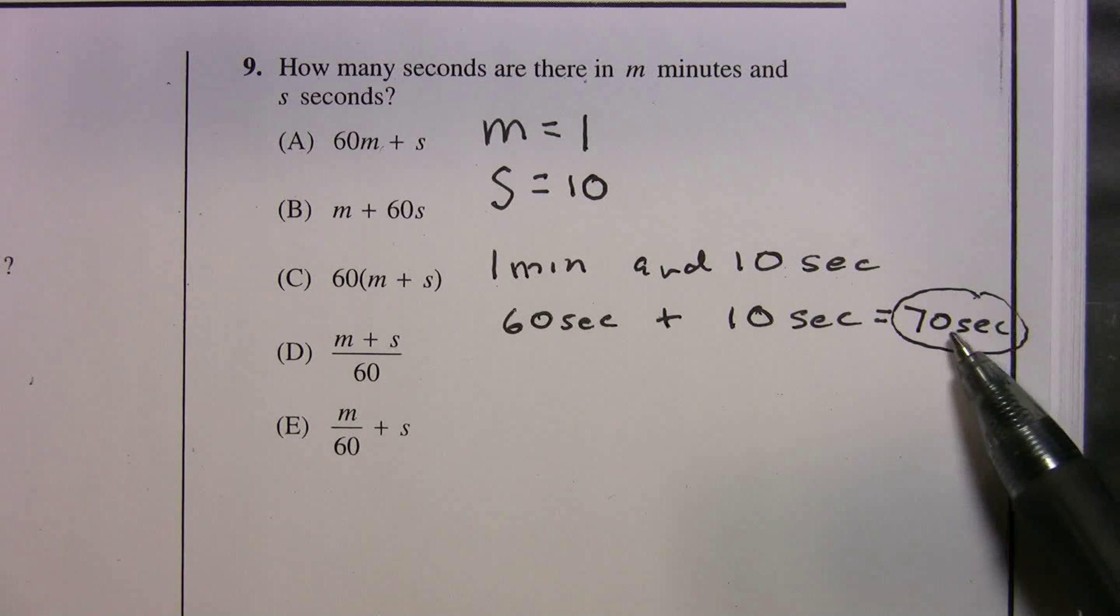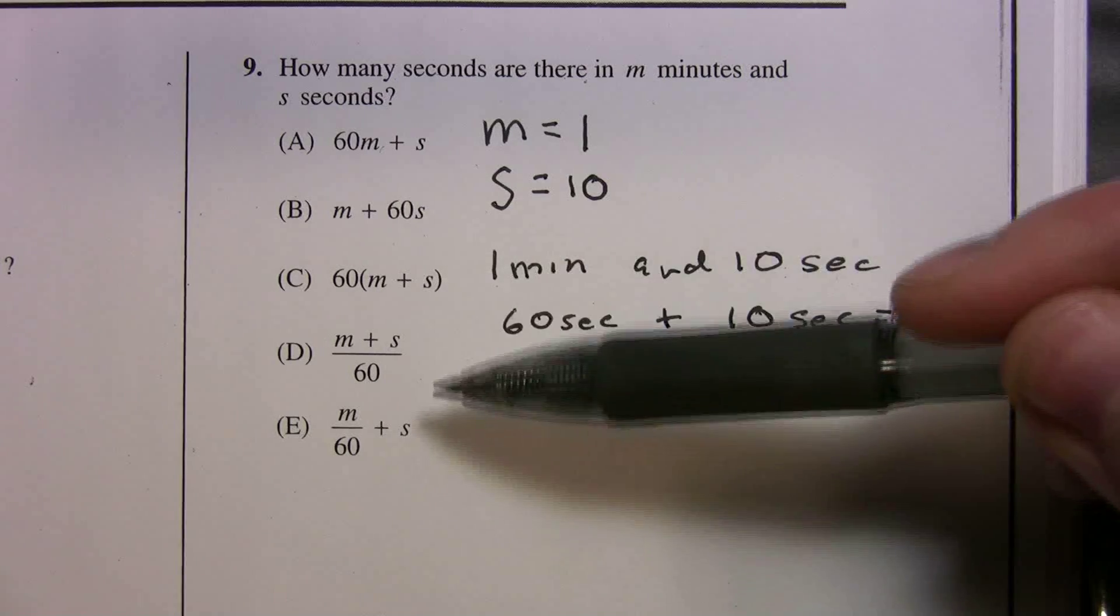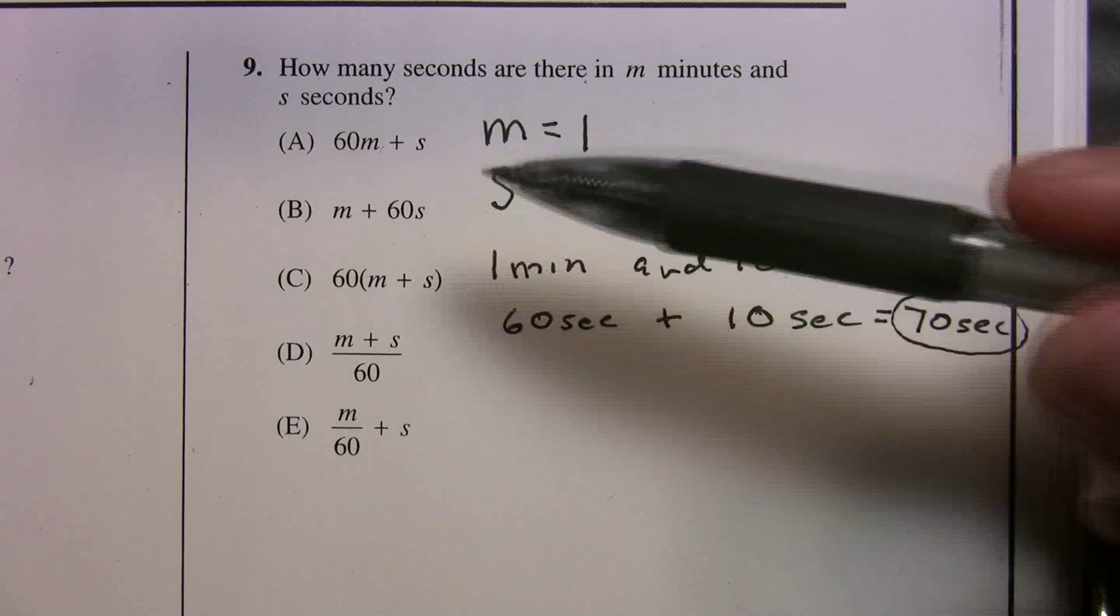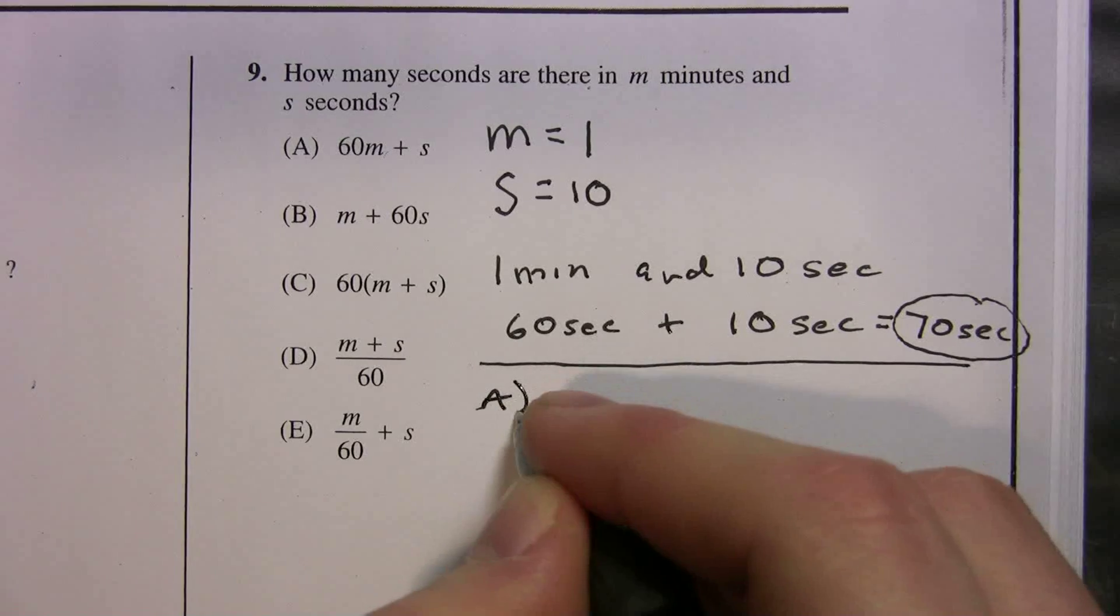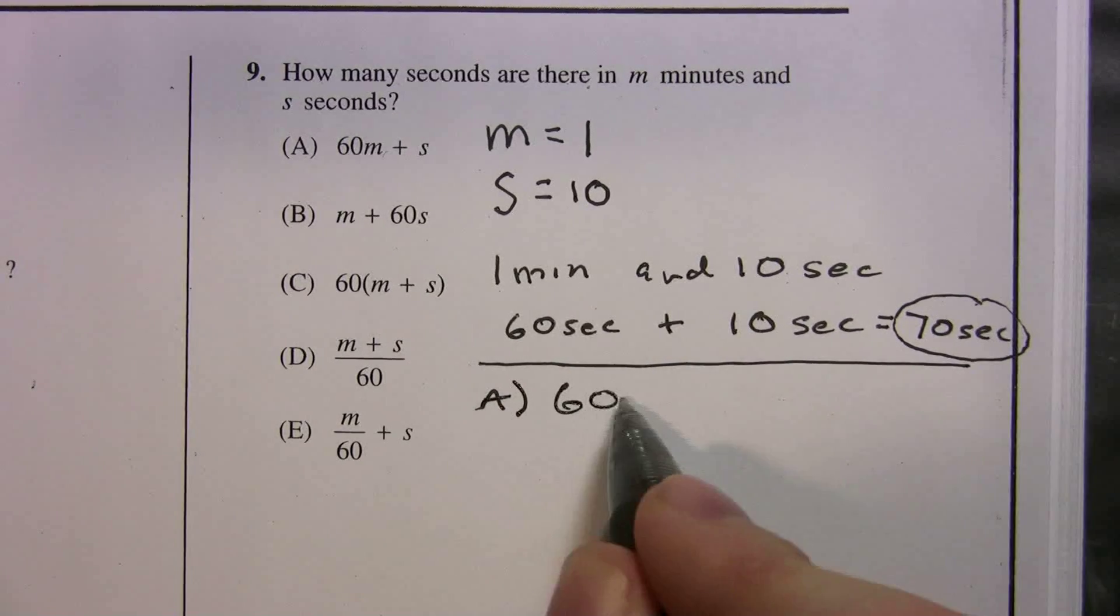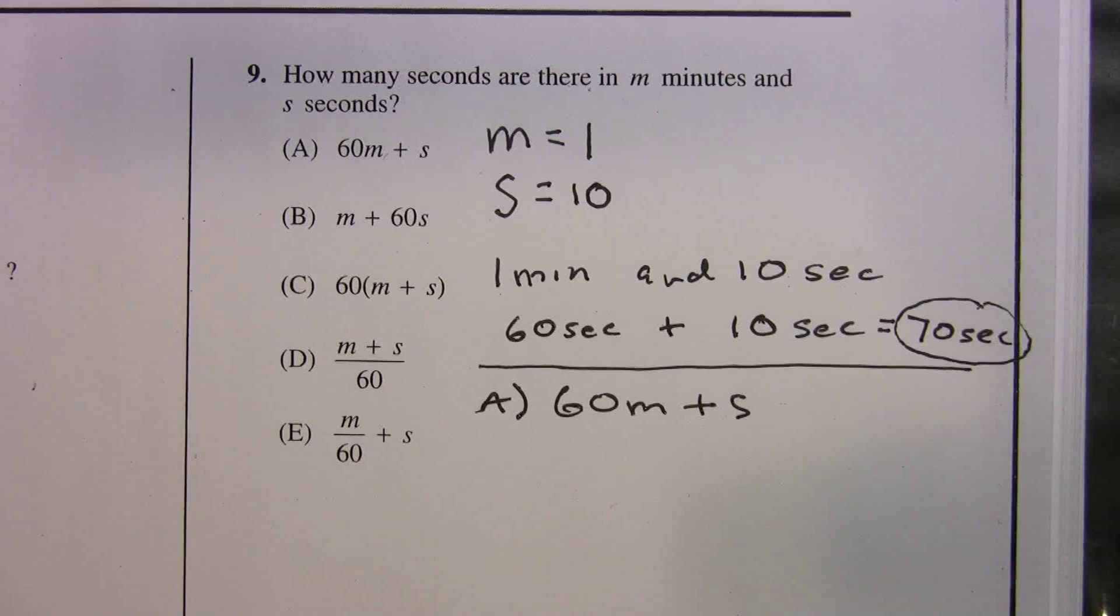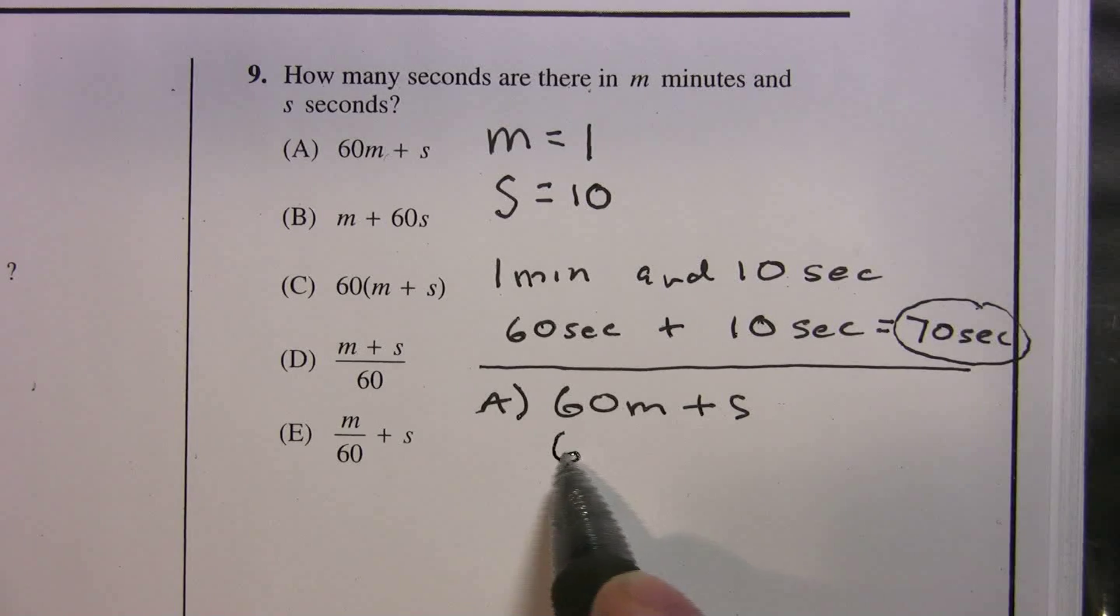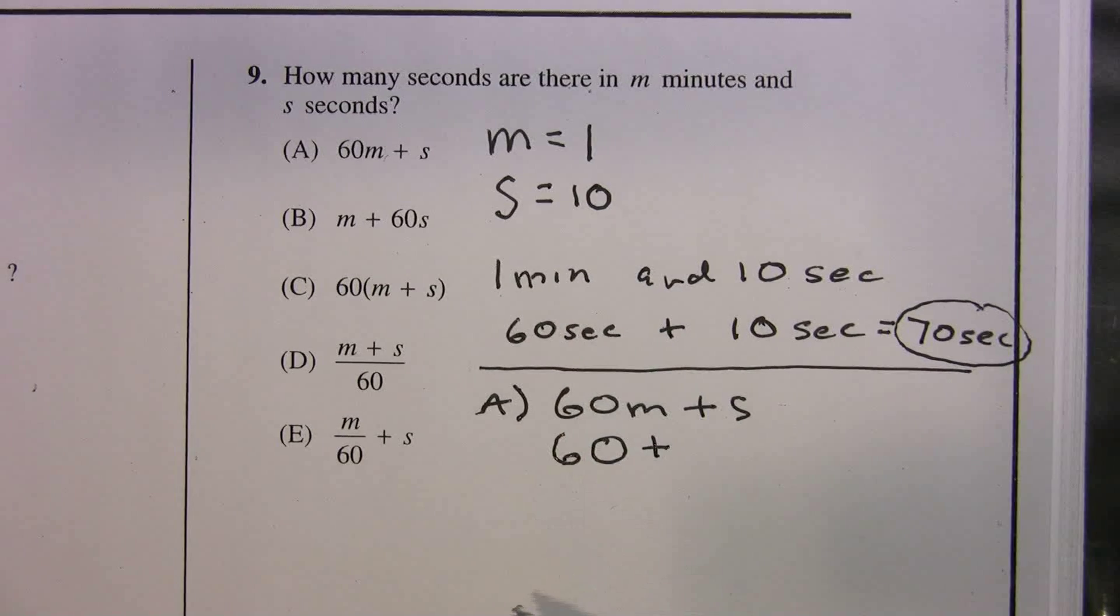Once you get this number, you have to find that number in the answer choices. So we have to plug in what we picked for m and s into our answer choices. Let's test our answers. I can start with A. So it says 60m + s. What did I say m was? I said m was 1. So that's 60 times 1, or 60. What did I say s was? I said s was 10.